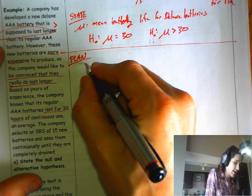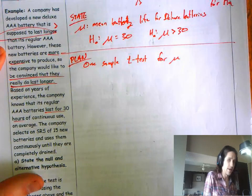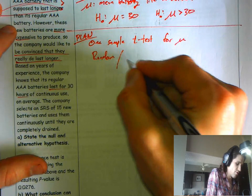I'll tell you for now that this would be a one sample, this is for means, so you might have surmised that it's going to be a t-test for mu. We would have to check conditions normally, random, normal, and independent.